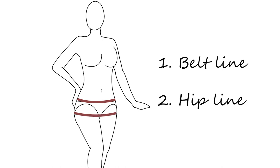First, take two measurements on your body. Beltline, this is where the waistband of your pants would sit. Measure the circumference. And hip line, this is the largest part of your hips. Again, measure the circumference.